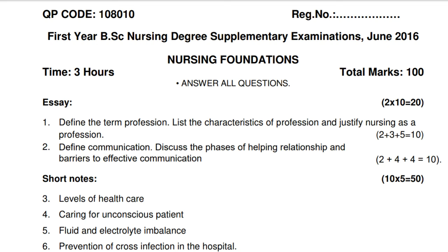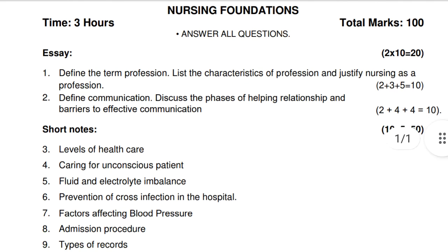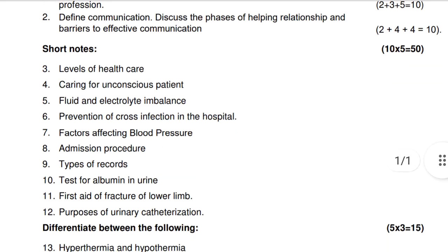Question number 2: Define communication — 2 marks. Discuss the phases of helping relationship — 4 marks. And barriers to effective communication — 4 marks. Total 10 marks.